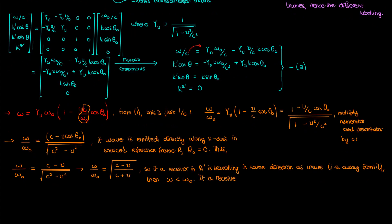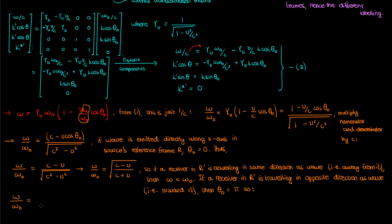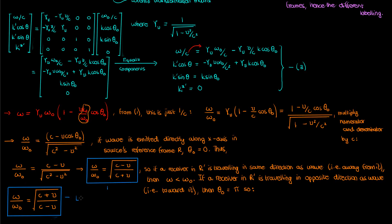If the receiver in R' is traveling in the same direction as the electromagnetic wave — running away from the wave — then the frequency perceived is less than the original frequency from the source. This is a red shift, shifted to a lower frequency. On the other hand, if the receiver travels in the opposite direction as the wave, then theta-naught equals pi, and you can show that the ratio of angular frequencies becomes flipped, giving a blue shift to a higher frequency. These two formulas cover the longitudinal Doppler effect for light, which occurs when the receiver travels along the same line as the wave.